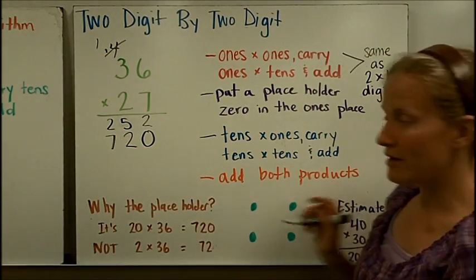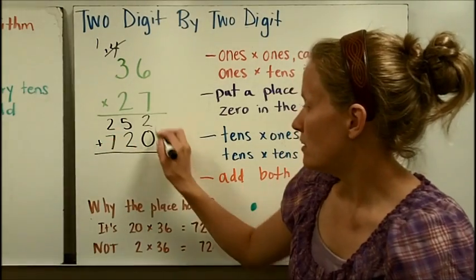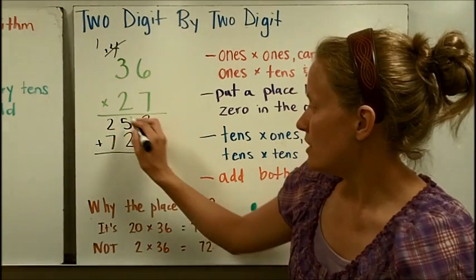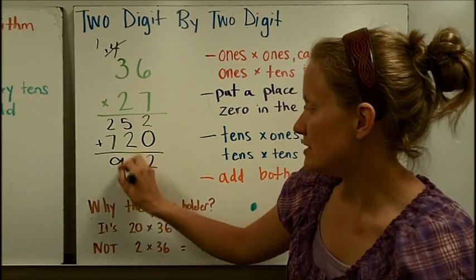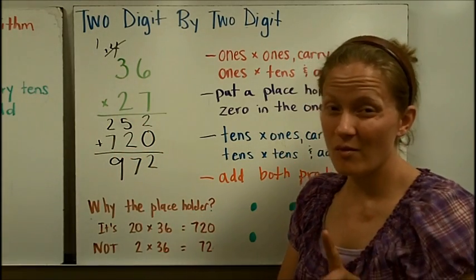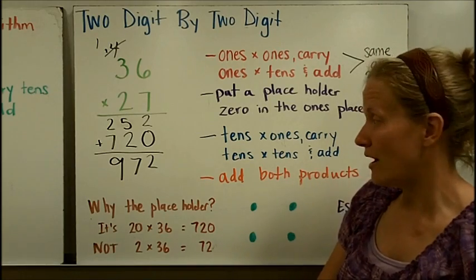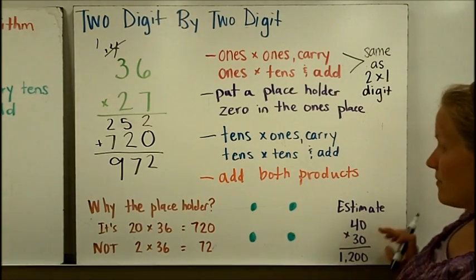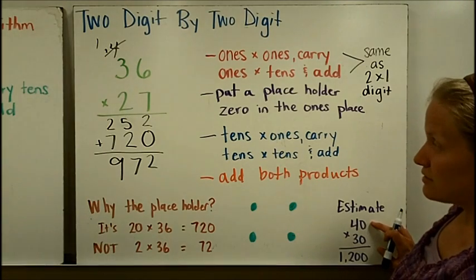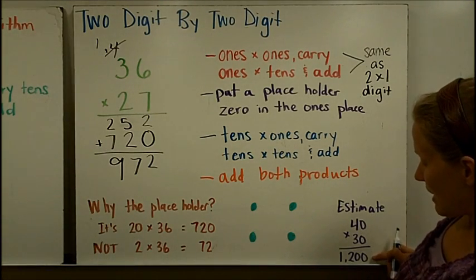Now I'm going to add both products. 2 plus 0 is 2. 5 plus 2 is 7. 2 plus 7 is 9. Now quickly, before we go back and talk about what happened and why, let's double check that our answer makes sense. I estimated by rounding 36 to 40 and 27 to 30 and I got 1,200.